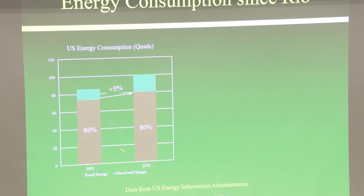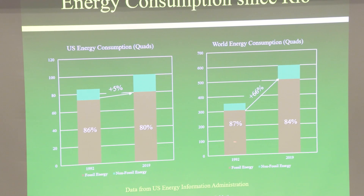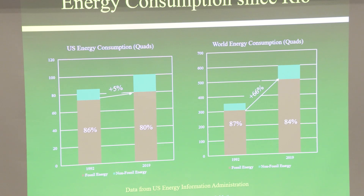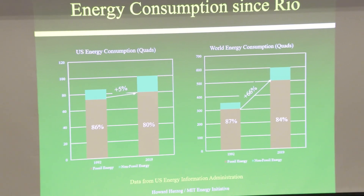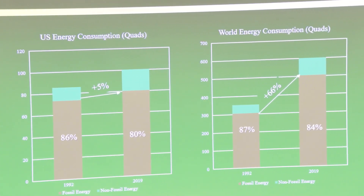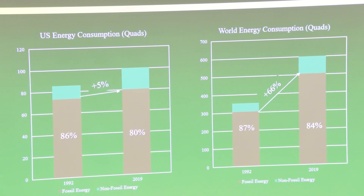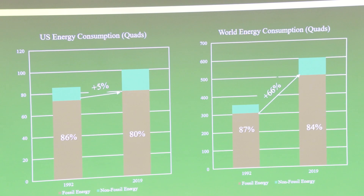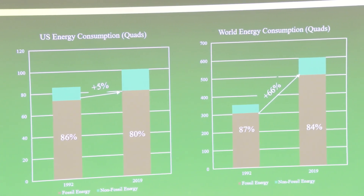Is the world doing any better? The answer is no. The world has gone up 66% in its use of fossil energy. Non-fossil is only at about 84%, so non-fossil is growing faster than fossil, but not even growing fast enough to absorb all new energy uses, let alone back out fossil fuels. Policy is not really working. People are optimistic that things will go better in the future, but we're almost surely going to overshoot the 2°C target. That's why people talk about negative emissions so much.